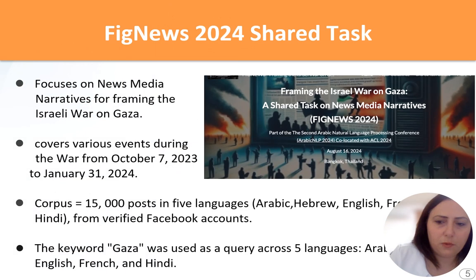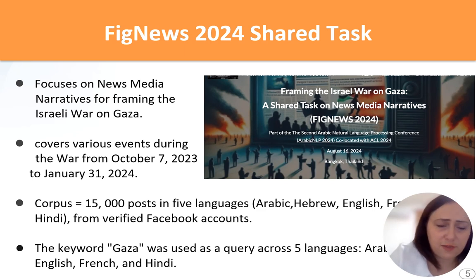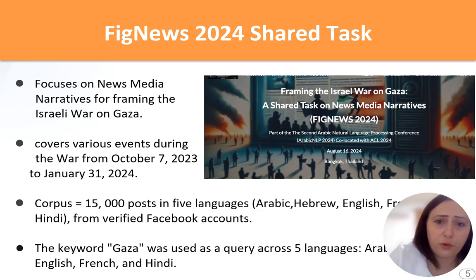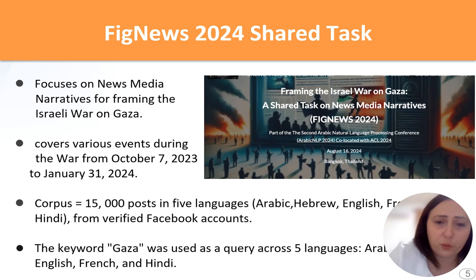The FIG News Shared Task focuses on framing the Israeli war on Gaza by focusing on news media narratives. It covers different events of the war during the period of October 7, 2023 to January 31st, 2024. The corpus consists of 15,000 Facebook posts from verified accounts, using the word Gaza as a keyword for the query.